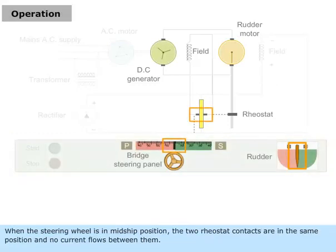When the steering wheel is in mid-ship position, the two rheostat contacts are in the same position and no current flows between them.